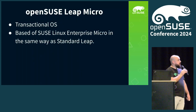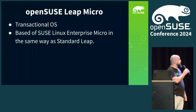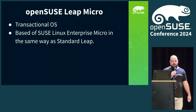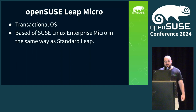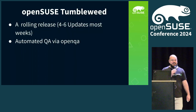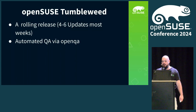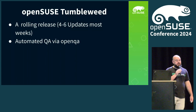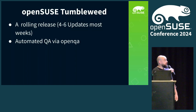Next along the road, we have OpenSESA Leap Micro, which is a transactional OS in the micro OS style. Similarly to Leap being based off SUSE Linux Enterprise, this is based off SUSE Linux Enterprise Micro. Next, we jump to the other end of the scale with OpenSESA Tumbleweed, which is a rolling release. You might have heard of Arch or Gentoo or many other rolling releases, but the big difference is we have OpenQA — stuff gets tested before it hits your laptop, so it breaks a lot less often.